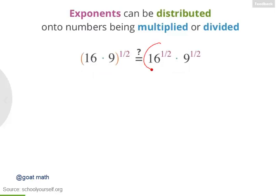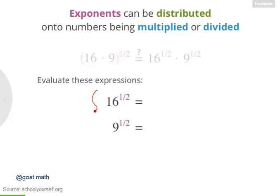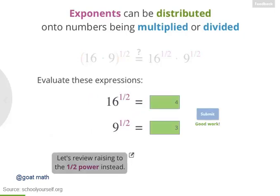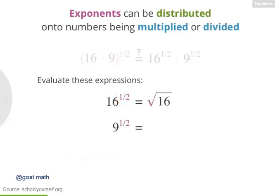First, let's look at 16 to the 1 half and 9 to the 1 half. Raising to the 1 half is the same as taking a square root, so 16 to the 1 half is the square root of 16, or 4, and 9 to the 1 half is the square root of 9, or 3.